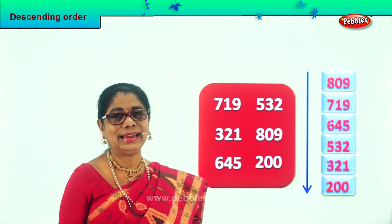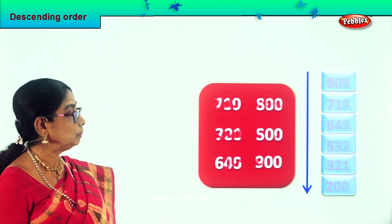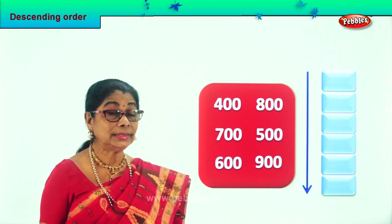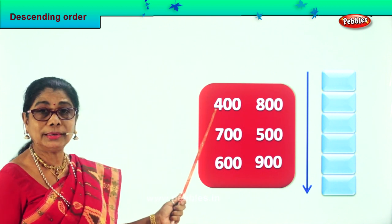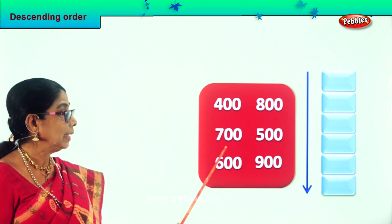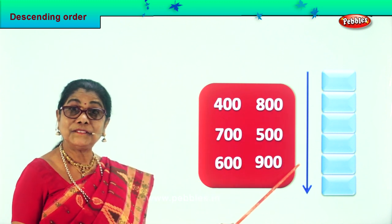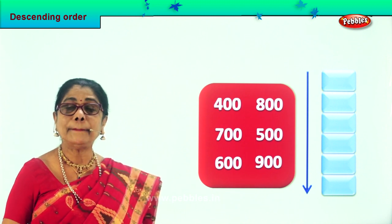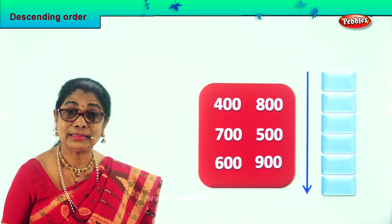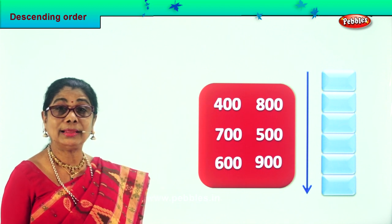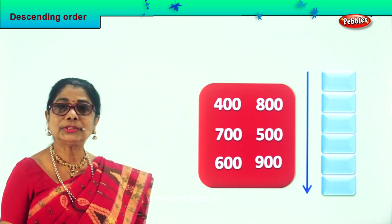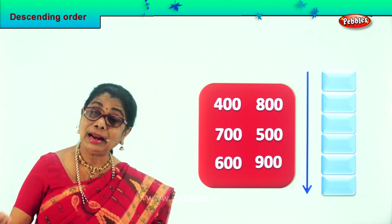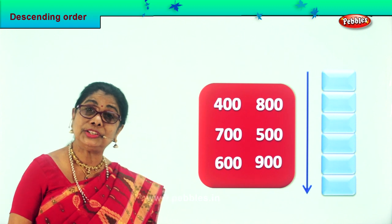Let's take another sum. Let's call out and read aloud the numbers. Four hundred, eight hundred, seven hundred, five hundred, nine hundred and six hundred. All numbers are in hundreds — you have two zeros at the end of each number. So it's very easy now to find the biggest number. Let's look at the hundredth place — which is the biggest digit over there?